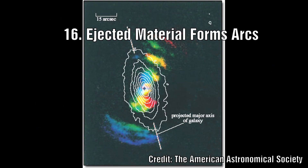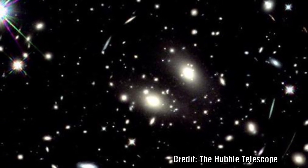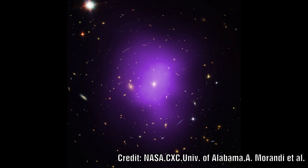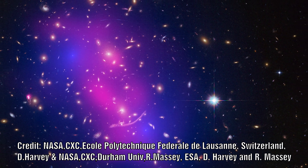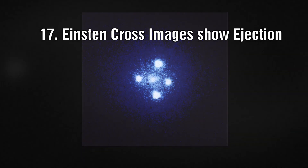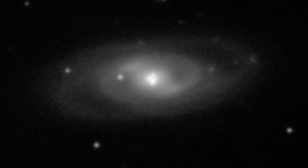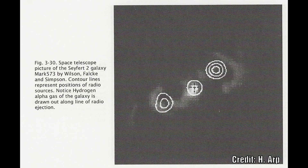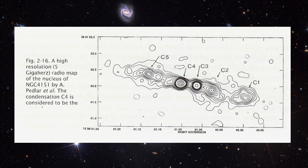Number 16: The material ejected from active galaxies tends to form expanding shells which can look like arcs. Gravitationally lensed images that show arcs may in fact be this ejected material, which would have a higher redshift making them appear as distant objects only because of their redshift. Number 17: Einstein cross images may actually be the ejection process of active objects out of the galaxy along both axes, as seen in other galaxy images showing clear symmetry of ejected material — in those cases radio or X-ray sources.